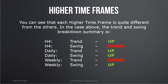The trend and swing breakdown summary is: the four-hour trend is up, the four-hour swing is down, the daily trend is up, the daily swing is up, the weekly trend is down, and the weekly swing is up. That gives us four up and two down.